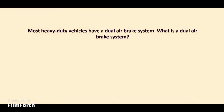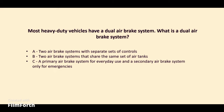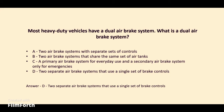Most heavy-duty vehicles have a dual air brake system. What is a dual air brake system? A. Two air brake systems with separate sets of controls. B. Two air brake systems that share the same set of air tanks. C. A primary air brake system for everyday use and a secondary air brake system only for emergencies. D. Two separate air brake systems that use a single set of brake controls. The answer: D. Two separate air brake systems that use a single set of brake controls.